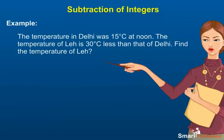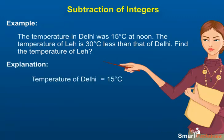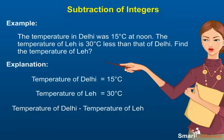Example: The temperature in Delhi was 15°C at noon. The temperature of Leh is 30°C less than that of Delhi. Find the temperature of Leh. Explanation: Temperature of Delhi = 15°C. Temperature of Leh is 30°C less than Delhi. So the temperature of Leh is 15 - 30 = -15°C.